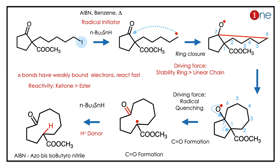The reaction is dictated by the reagents. First, AIBN is an azo compound — it will induce radical formation. The first step is radical formation at the halide. Then the double bond is attacked by the radical, forming a new ring.